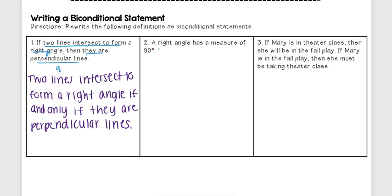Let's look at this next one. This one says: a right angle has a measure of 90 degrees. So I'm going to write 'right angle' as my hypothesis and 'has a measure of 90 degrees' as my conclusion.